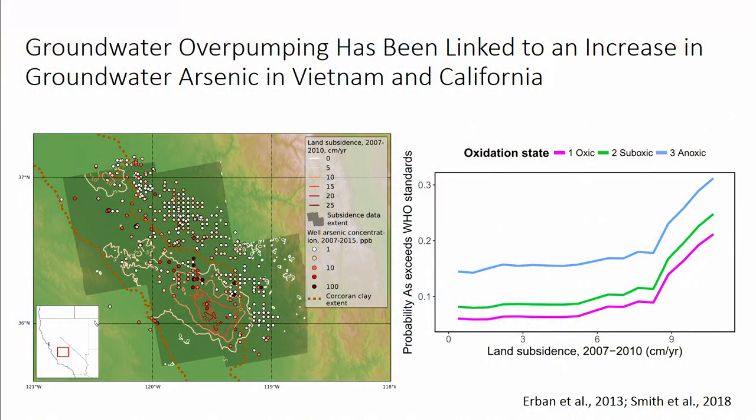One last thing I want to talk about with this high-use scenario: we heard about arsenic — Holly gave a great talk on that. A lot of times, especially in Southeast Asia, you'll go deep to try to get clean, arsenic-free water. There have been two studies now — one we did in California and another from Urban et al. in Vietnam — that showed going deep and pumping deep for clean water was, in those two cases, releasing arsenic from clays where it had previously been trapped, increasing arsenic in the groundwater supply. As Holly also mentioned, arsenic is very complex, but it's another thing to think about in major use scenarios where you're pumping a lot from confined aquifers — you are potentially damaging your water quality as well as losing quantity.